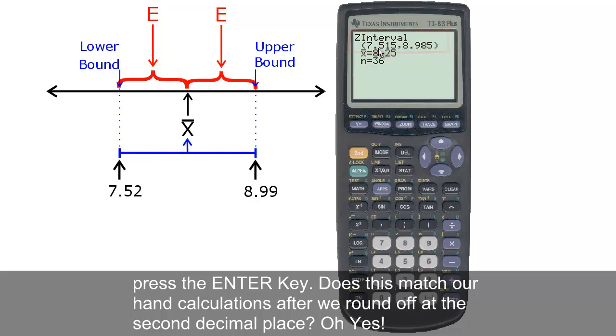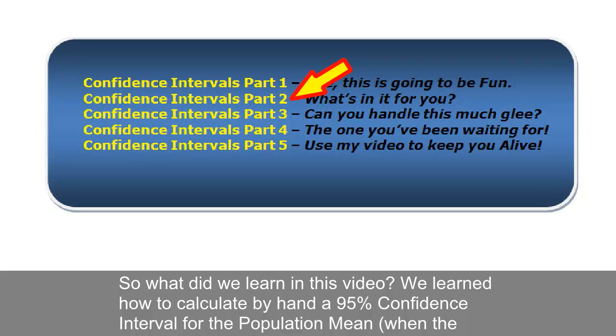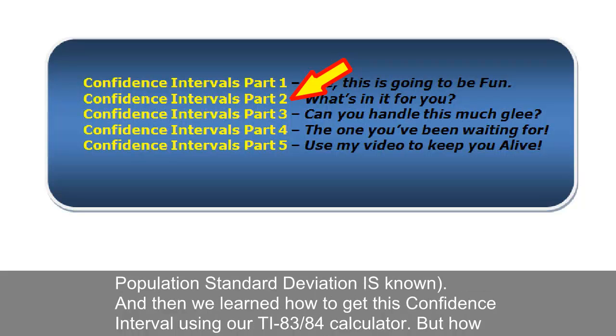Does this match our hand calculations after we round off at the second decimal place? Oh yes! So what did we learn in this video? We learned how to calculate by hand a 95% confidence interval for the population mean when the population standard deviation is known. And then we learned how to get this confidence interval using our TI-83/84 calculator.